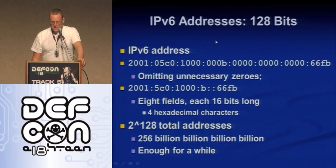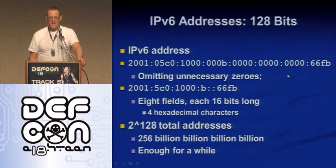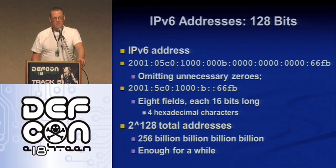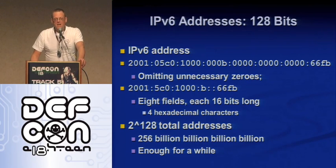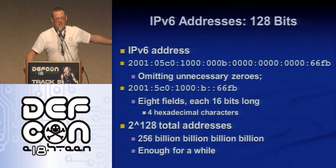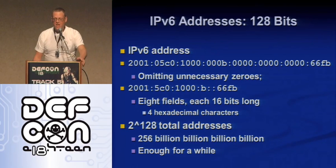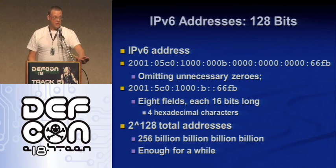IP version 6 is the answer — make the addresses really long and disgusting in hexadecimal. That is an IPv6 address; learn to love it. That is 128 bits long, and the good thing is there are enough of them — 256 billion billion billion billion. So until we colonize the entire galaxy and have every atom in our body individually addressed, we're not going to run out. We will not have to have IP version 7 in another 10 years, at least not because we ran out of addresses.